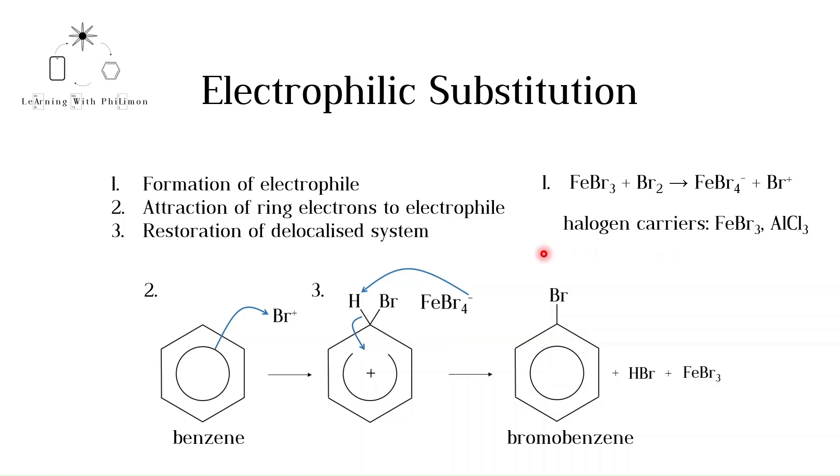In the second step, the electrons in the benzene ring are attracted to the electrophile. In the third step, the delocalized system is restored. In this case, we form bromobenzene.